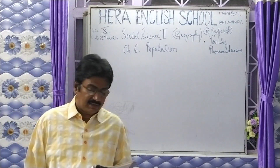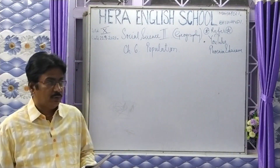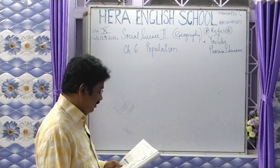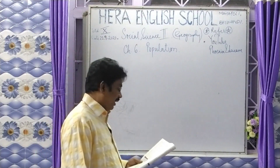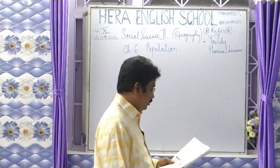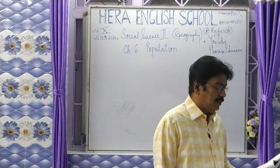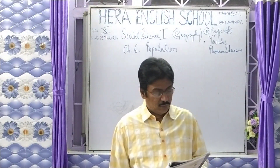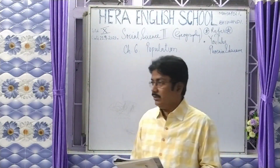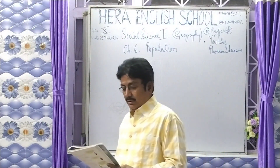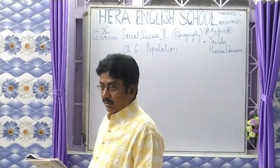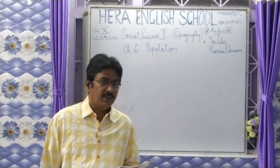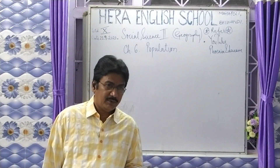On the graph, the x-axis shows years, and the y-axis shows the growth rate of population in percentage, starting from 0.0, then 0.5, 1, 1.5, 2, 2.5, 3, and so on.